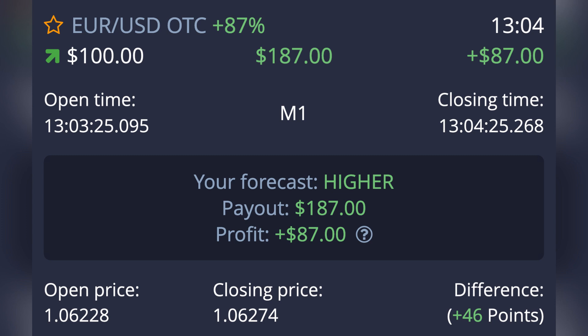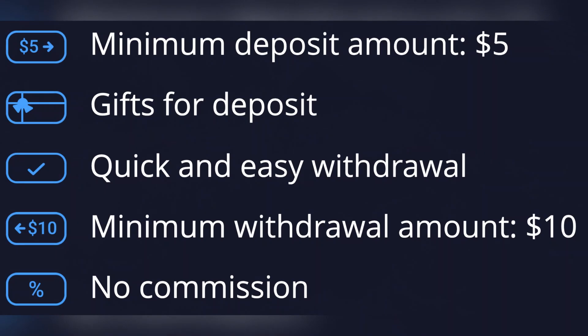After the time ends, the trade will automatically close and you'll see the results. A correct prediction means you'll earn a profit, typically a 70-90% payout. A wrong prediction means you'll lose the amount you invested.